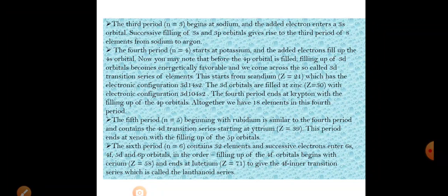The 3d electrons are filled up to zinc, after which p-block elements begin. The fourth period ends at krypton. Total orbitals in the fourth period: 4s (1 orbital) + 3d (5 orbitals) + 4p (3 orbitals) = 9 orbitals. Therefore, total elements = 2 × 9 = 18 elements in the fourth period.